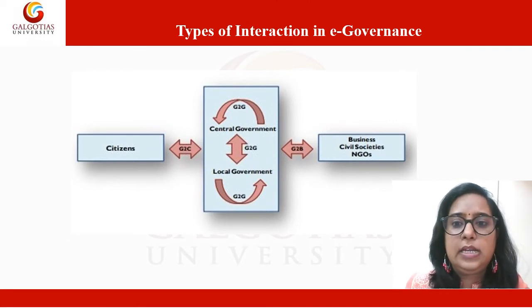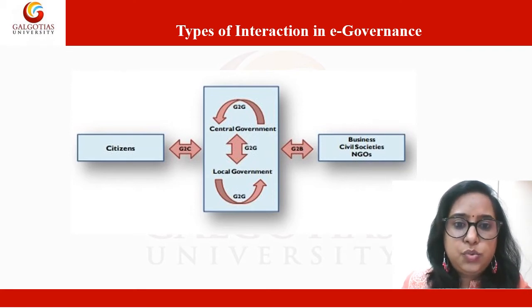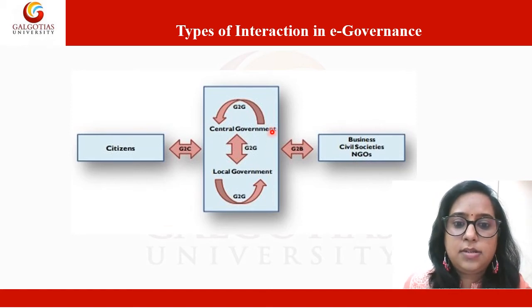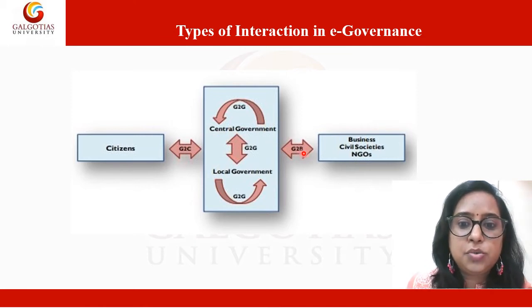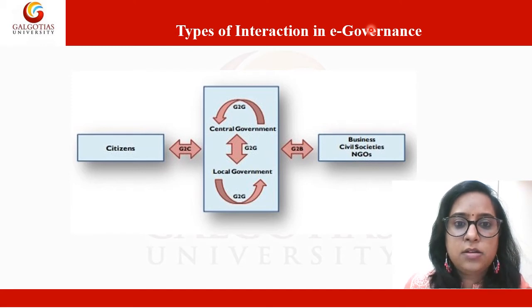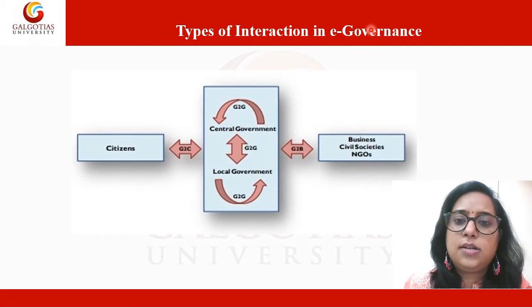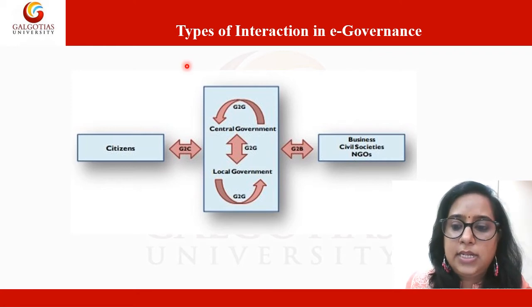What are the types of interaction in e-governance? As the picture depicts, the types of interaction in e-governance include G2G — government to government, G2B — government to business, G2C — government to citizen, and G2E — government to employees. These represent the key interaction types of government in e-governance.